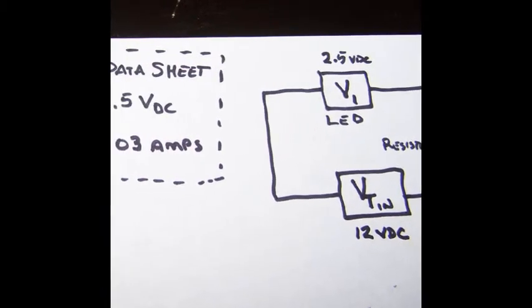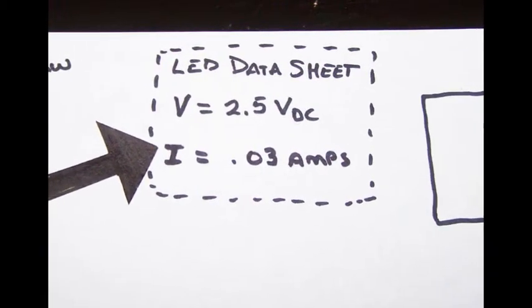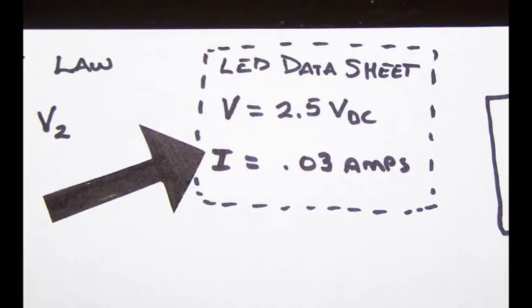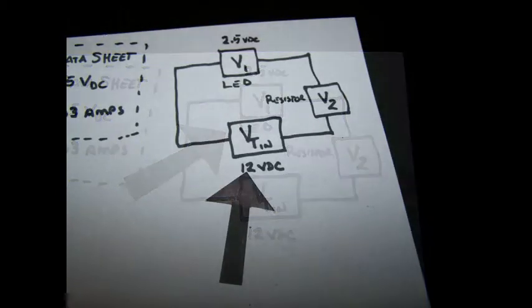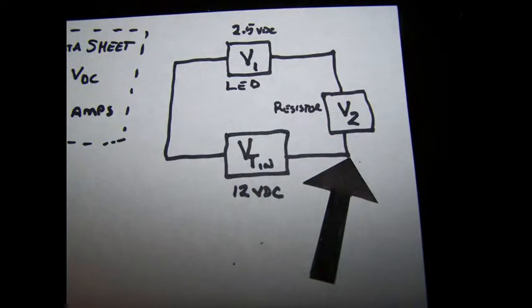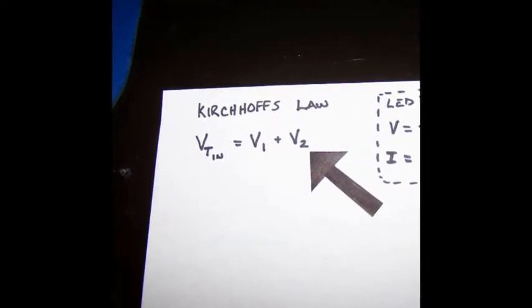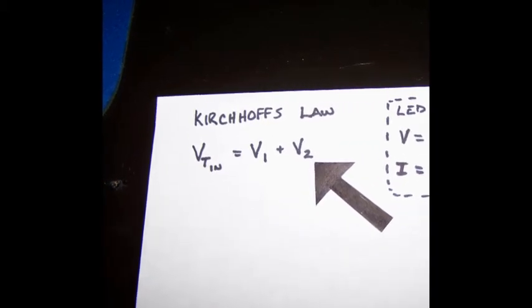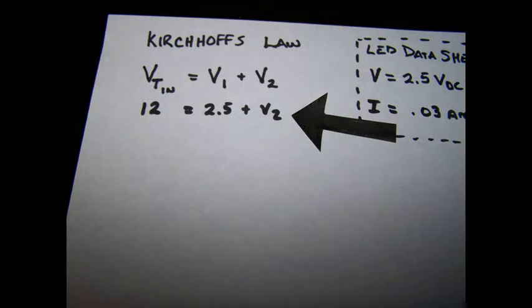Every electronic component has a data sheet, and this data sheet will tell you pertinent information about the component. I now know that the particular LED I'm using drops 2.5 volts DC across it. I go back over to my schematic, and I fill in 2.5 volts for V1, and I know that the VT in my power supply is 12 volts DC. What we don't know is what voltage will the resistor drop, and believe it or not, there's a formula that can tell us that. There was a fine fellow named Kirchhoff that made a law. This law said the sum of the voltages dropped in a circuit must equal the voltage put into the circuit.